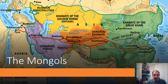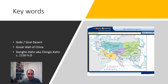Just to give you some perspective, here's a smaller map with some of the keywords associated with the rise of the Mongols. You can see the Gobi Desert up here. Everything I'm circling here — that's the Roman Empire at its height. So this is why I say it's about four times bigger than the Roman Empire. It's that huge.